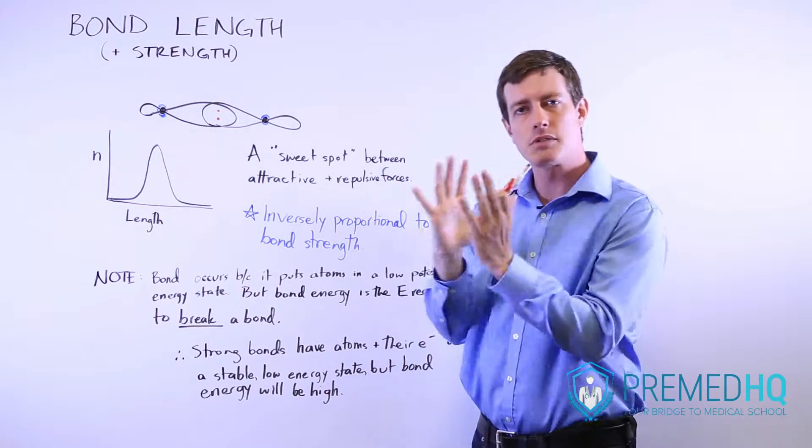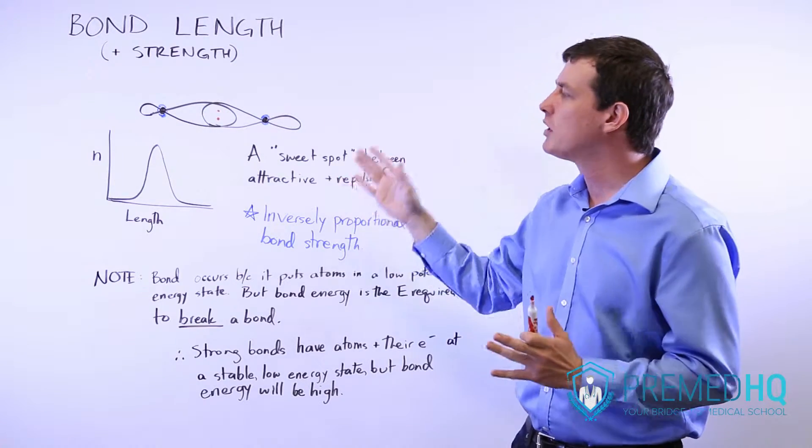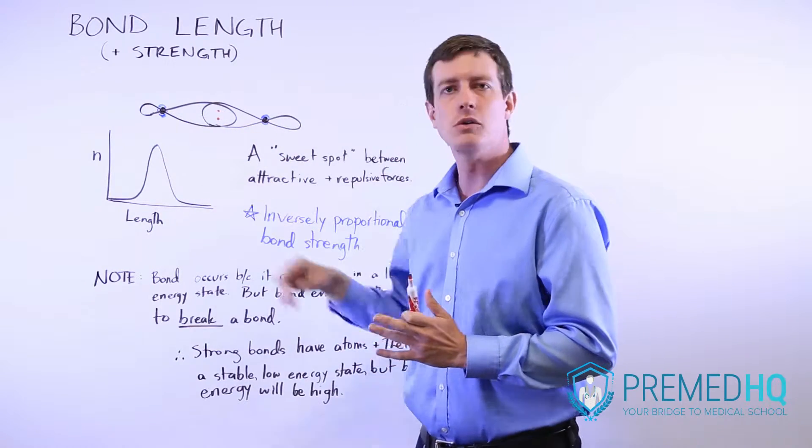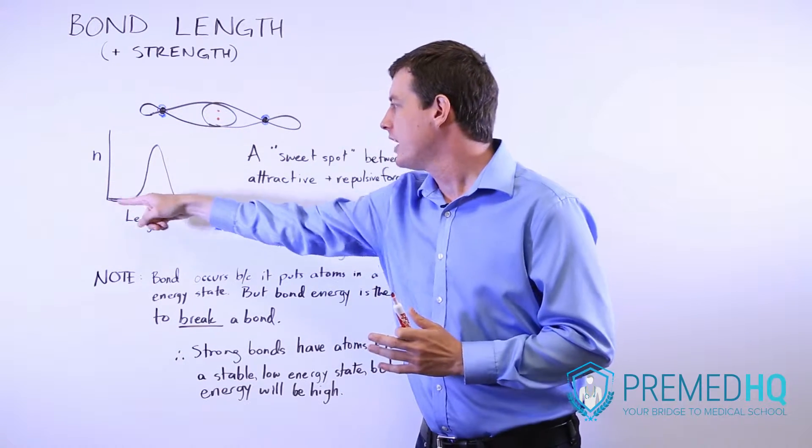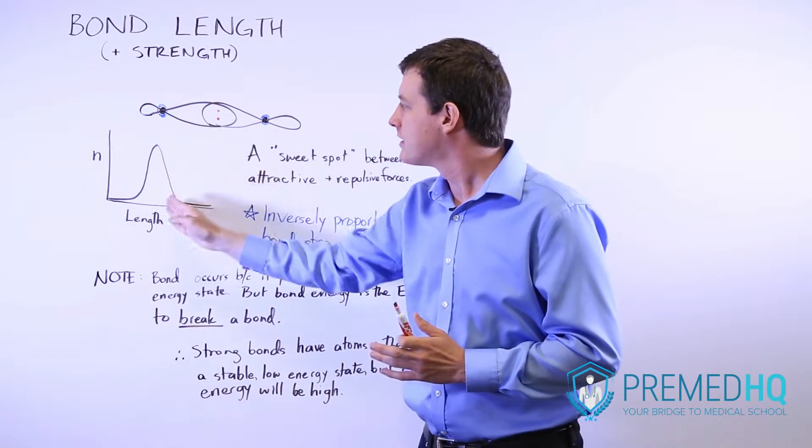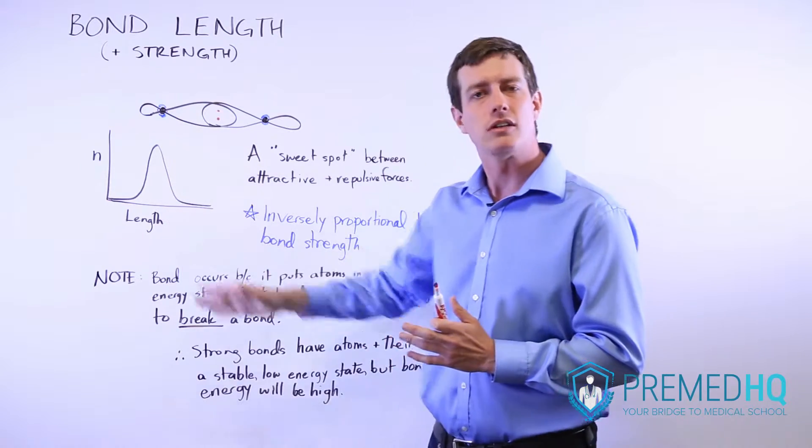Sometimes they're a bit longer, sometimes they're a bit closer. If you were to plot the distance between these two nuclei and the frequency at which these distances occur, what you would get is a bell curve that tends to center around a certain length.